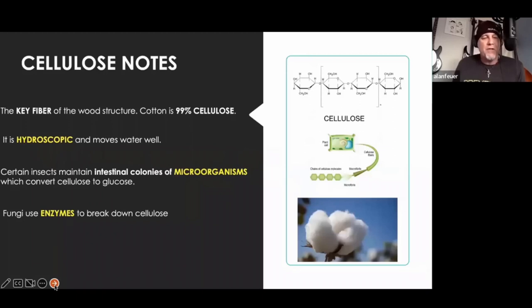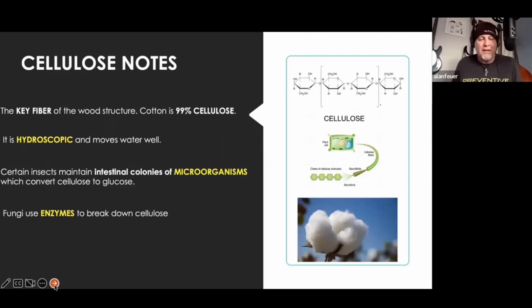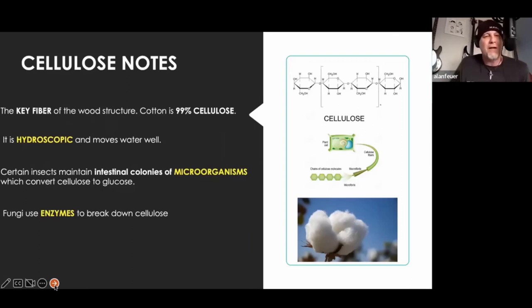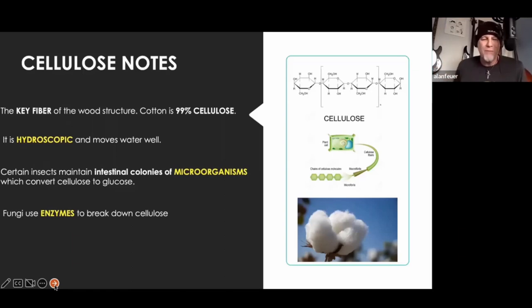The key fiber of the wood structure is cellulose. If you want to understand what cellulose is in its raw form, picture a cotton ball. It's fibrous, it stretches a little bit left, right, up and down, but it can't bear any weight — it has no structural integrity by itself. Also, if you were to take a piece of cotton fabric and lay it over the edge of a cup, you'd watch the water climb up that cellulose. That's that hygroscopic action where it moves water very well. Basically, the cellulose fibers bound together in a tree make the tree a giant straw — even when it's dead, it wants to suck water into it.